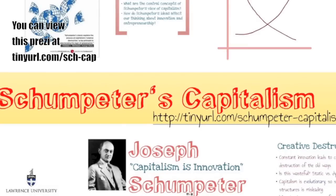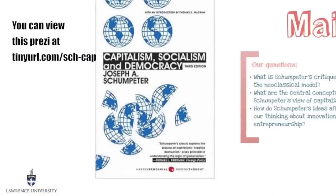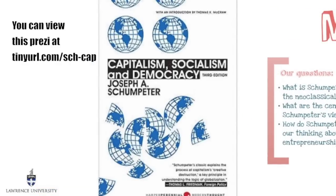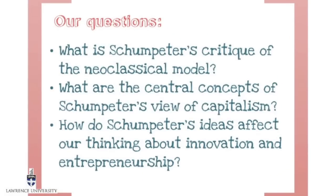Schumpeter describes his ideas partly in the book Capitalism, Socialism, and Democracy, in which he outlines his views about capitalism and socialism as economic systems and the relationship of these systems to the political system and democracy in particular. The questions we will be asking today are: what is Schumpeter's critique of the neoclassical model, the mainstream economic theory that was mainstream then and is still mainstream today? What are the central concepts of Schumpeter's view of capitalism, and how do these ideas affect our thinking about innovation and entrepreneurship today?